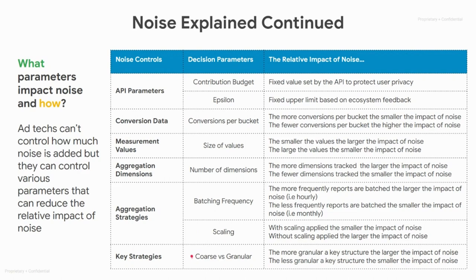Finally, we have key strategies: coarse versus granular. The more granular a key structure, the larger the impact of noise. In our example, we had a key structure of geography, campaign ID, and product category. If we were to remove one of these dimensions, we would most likely end up with more conversions per bucket, or larger blue bars, and therefore noise would have a smaller impact.